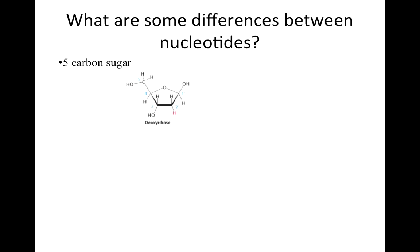This diagram shows deoxyribose, one of the two types of five-carbon sugars present in nucleic acids. Notice that the structure has five carbons, each of which is numbered, starting from the right, and going clockwise.